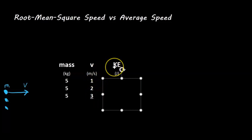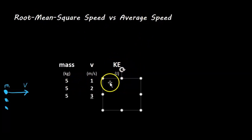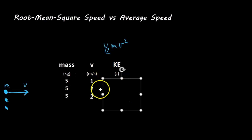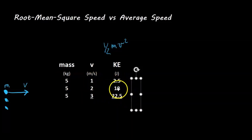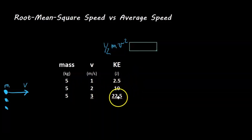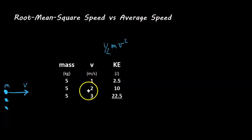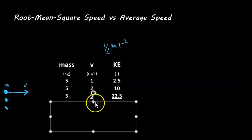We're going to calculate the kinetic energy, because I think it's a great way to show the difference between root mean squared speed and average speed. To calculate the kinetic energy of each one, we do one-half mv squared. For the first one: one-half times 5 times 1 squared = 2.5 joules. The second gives 10 joules, and the third gives 22.5 joules. So we have the speeds and kinetic energies of each object, and now let's calculate the average speed and the average kinetic energy.